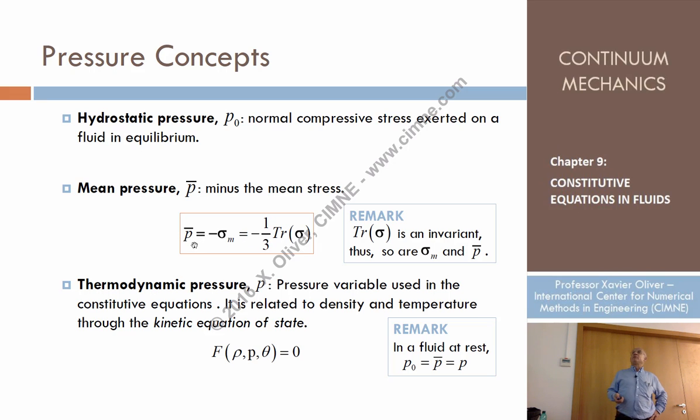Take the mean value and change the sign, and that is what we call the mean pressure. It's something different because it can be applied to continua which are not at rest. This is the mean pressure, denoted as P̄.